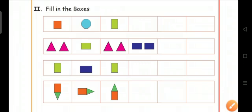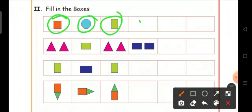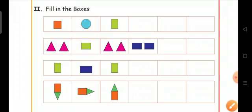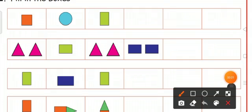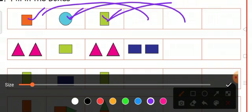Next, fill in the boxes. First one here given square and circle and rectangle. So, what picture should come next? So, the first picture square and next one circle and next one rectangle. So, here also come square and next box circle and next box rectangle.